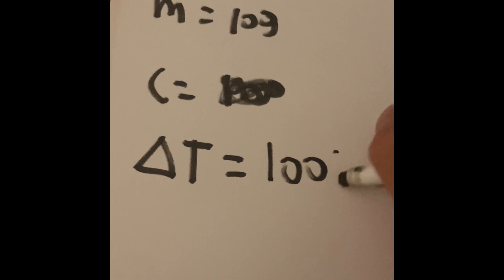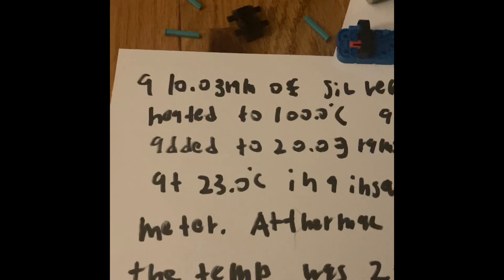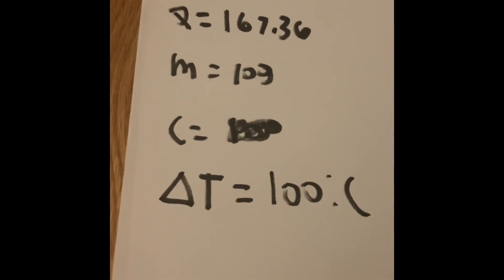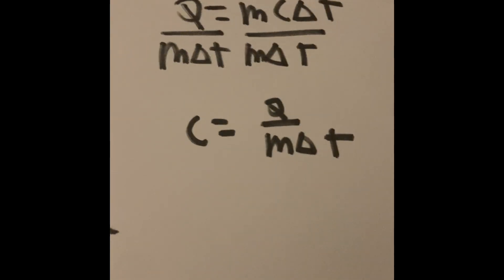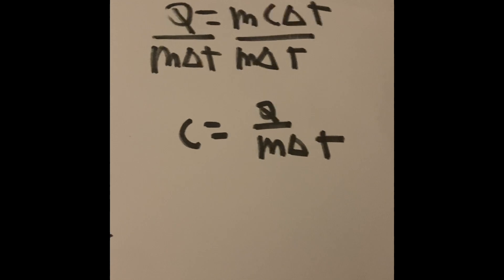Because it literally said that the cube of silver was heated up to 100 degrees Celsius. Now we have all the parts to complete our formula and find our final answer for the heat of the silver.